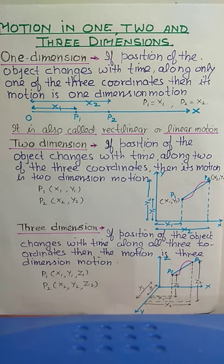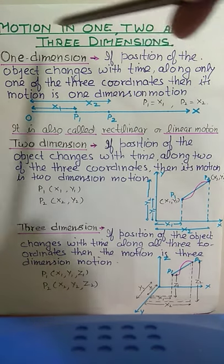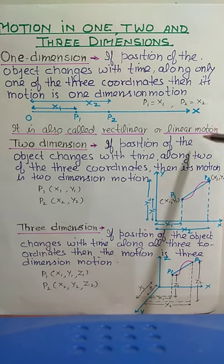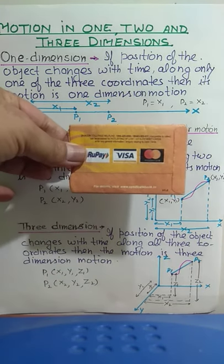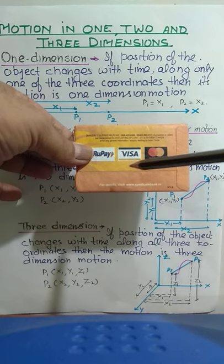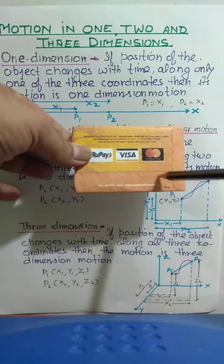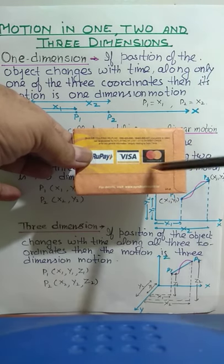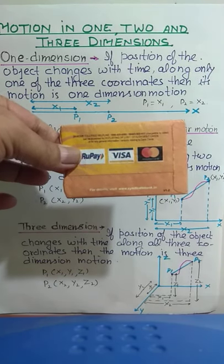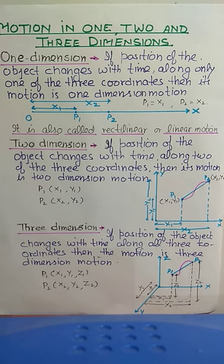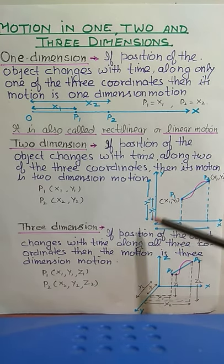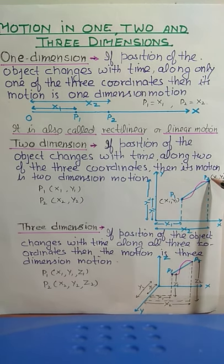One-dimensional motion is also known as rectilinear or linear motion. Now for two-dimensional motion: using a card with x-axis and y-axis, if any object moves on this plane, its motion will be two-dimensional motion. An object moving on the top of a table, on the floor, or on a wall — these are all two-dimensional motions.